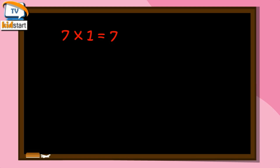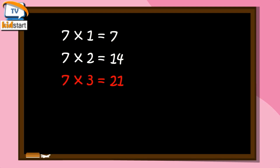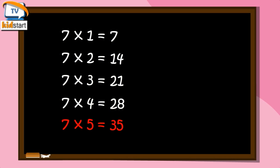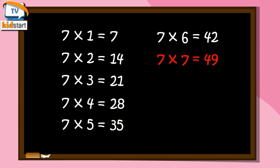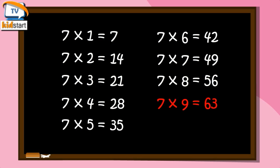7 ones are 7, 7 ones are 7. 7 twos are 14. 7 threes are 21. Seven threes are twenty-one. Seven fours are twenty-eight. Seven fives are thirty-five, seven fives are thirty-five. Seven sixes are forty-two, seven sixes are forty-two. Seven sevens are forty-nine, seven sevens are forty-nine. Seven eights are fifty-six, seven eights are fifty-six. Seven nines are sixty-three, seven nines are sixty-three. Seven tens are seventy, seven tens are seventy.